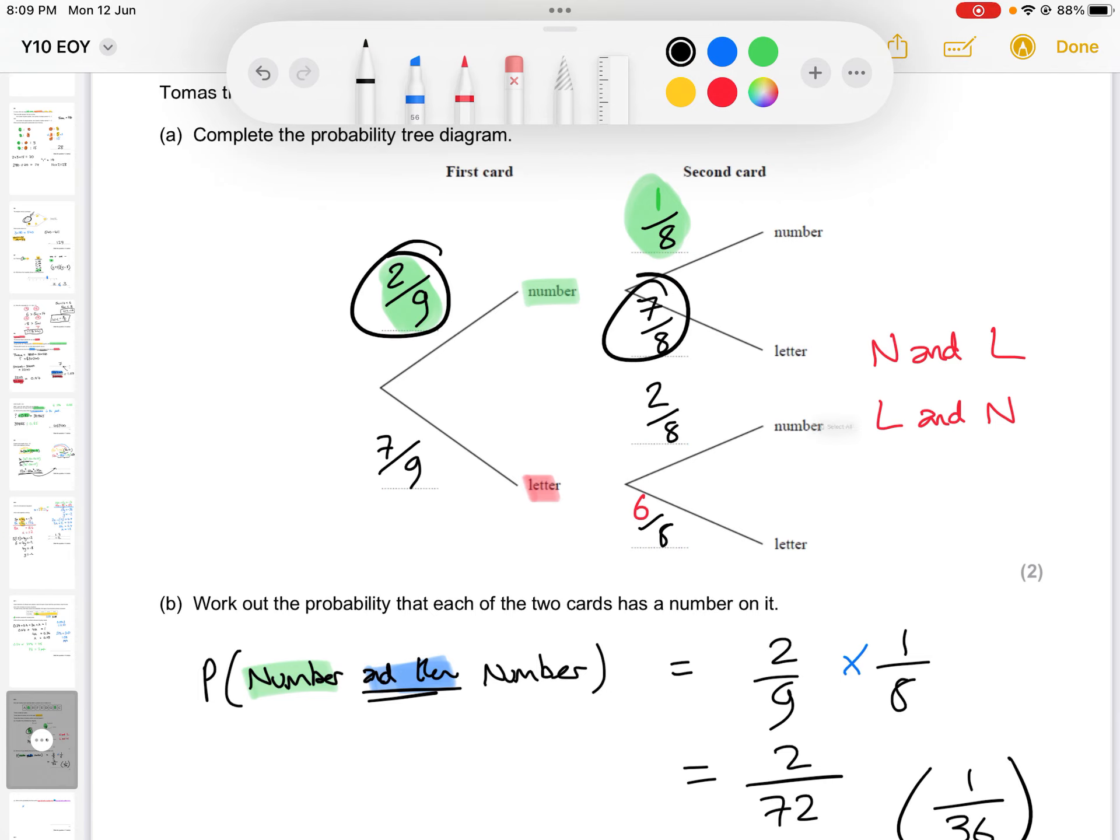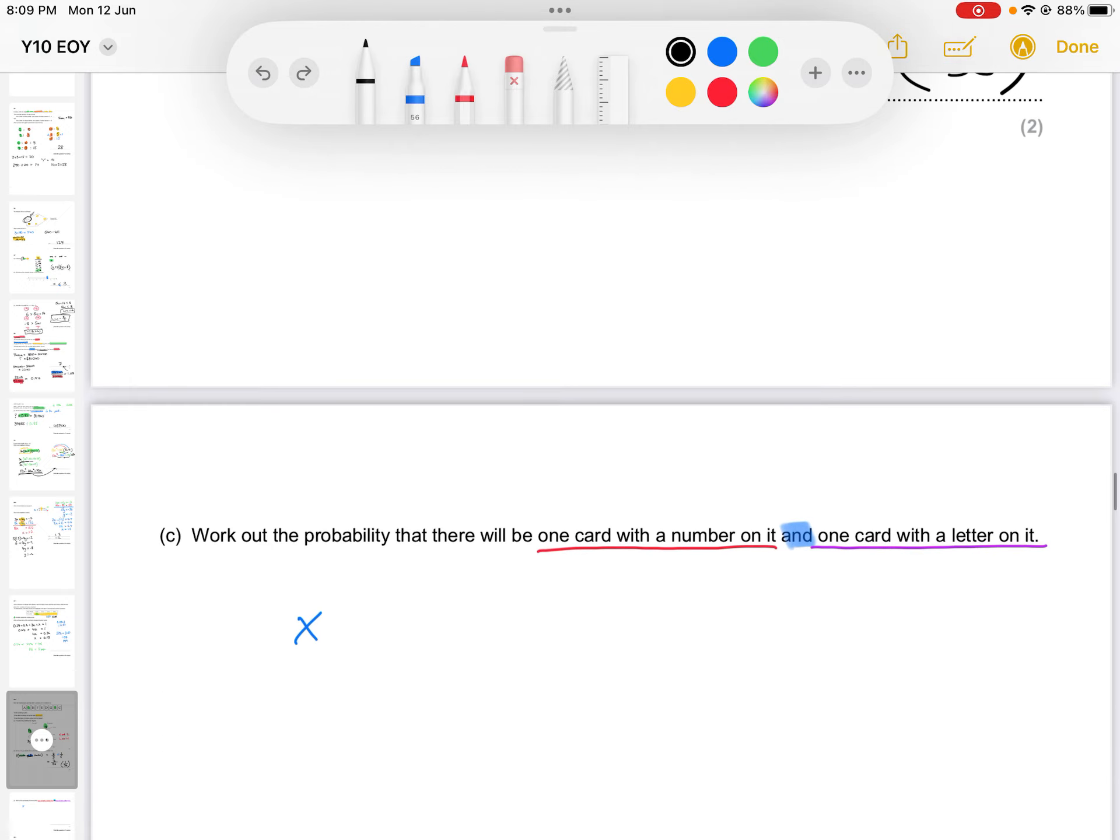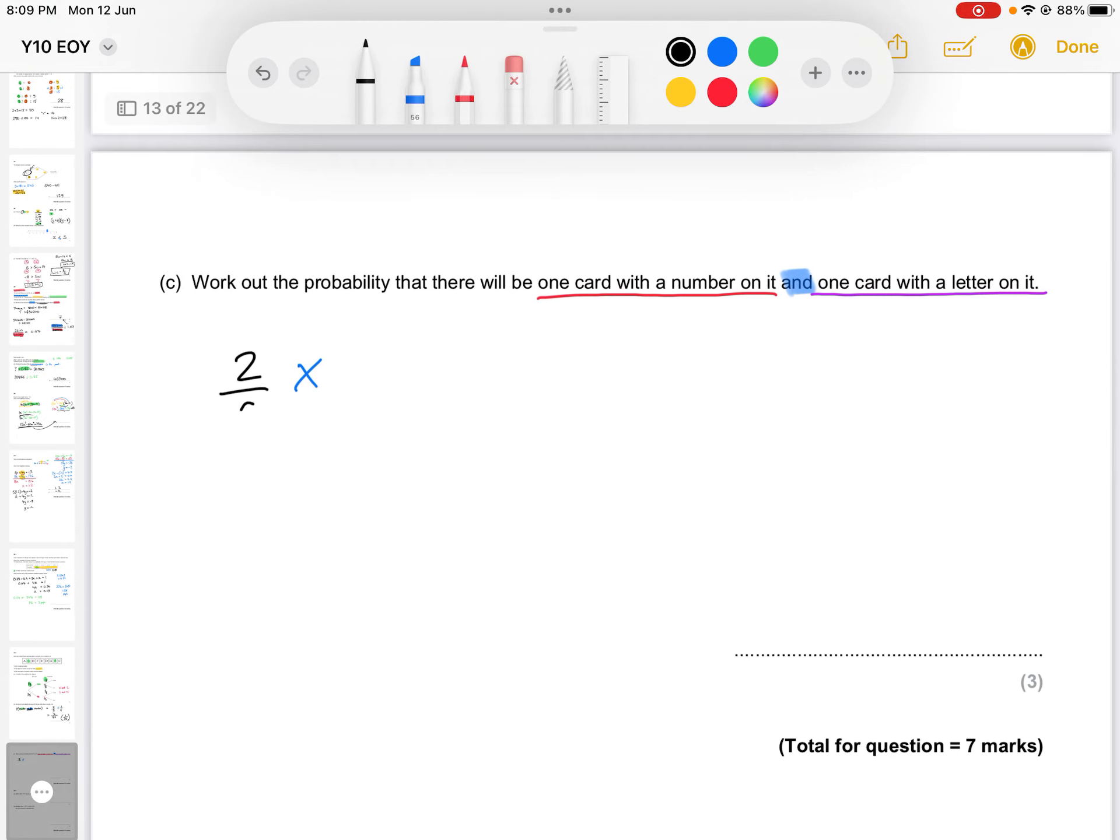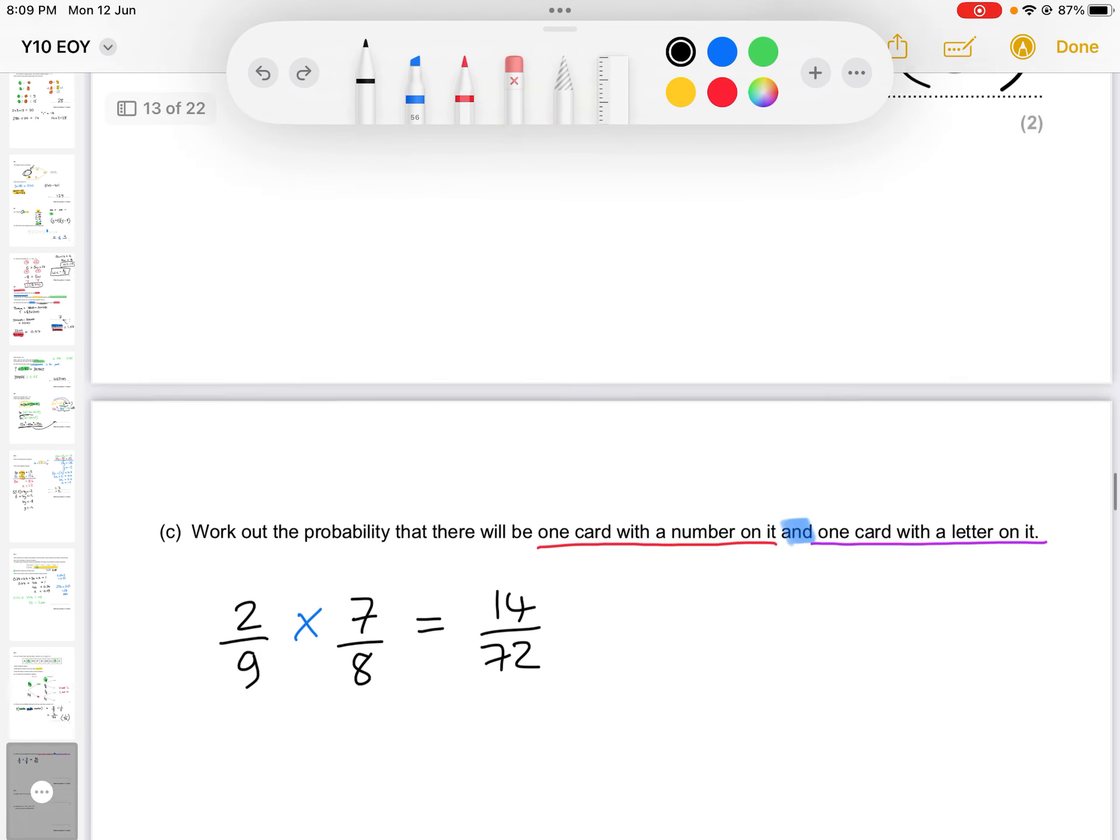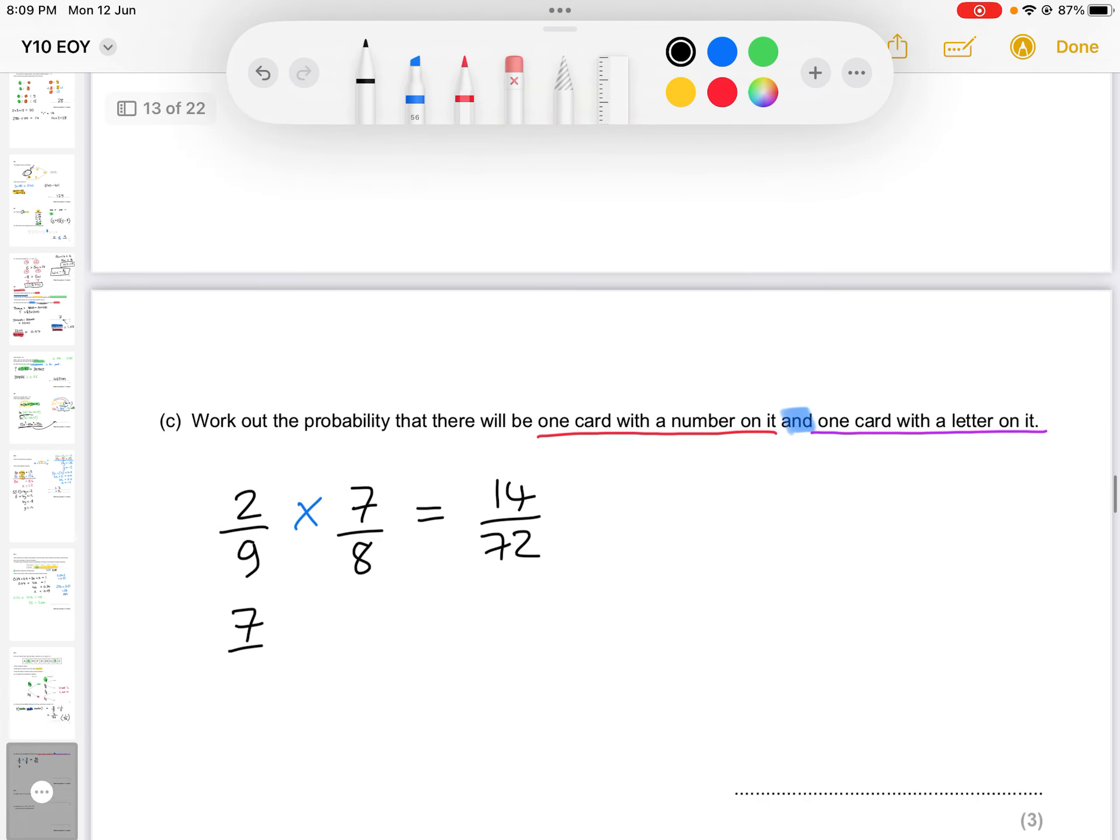So we have 2 over 9 times 7 over 8 for number and letter. So we have 2 over 9 times 7 over 8 for number over letter, which is going to give us 14 over 72. That does simplify, but I'm just going to leave it like that for now. And then we have 7 over 9 times 2 over 8 for number letter. 7 over 9 times 2 over 8, which will also give us 14 over 72.